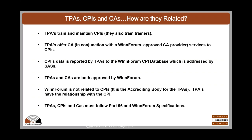A question came in: if a CPI leaves Company A and joins Company B, does their certification follow them? The certification belongs to the CPI, so wherever they go for employment they are free to move between employers or act as independent contractors. They will have a fixed CPIR ID, which is their identification, and their CA keys to identify themselves to the SAS. If they move from one employer to another, they're fine — there's no issue with that.